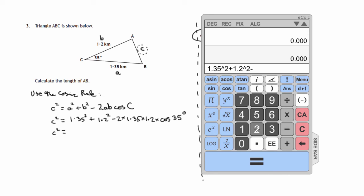minus 2 × 1.35 × 1.2 × the cosine of 35 degrees. That all comes to 0.608, so let's write that down: 0.608.